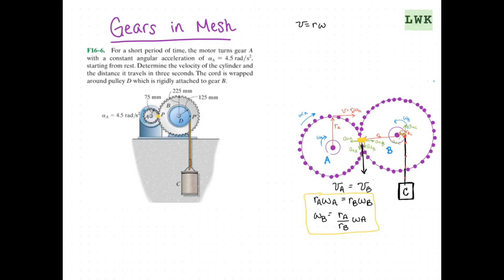Very similarly for our tangential acceleration — shown in green on the right — the tangential acceleration of A equals the tangential acceleration of B. Since tangential acceleration equals R times alpha, we can write radius of A times angular acceleration of A equals radius of B times angular acceleration of B. So the angular acceleration of B equals radius of A over radius of B times angular acceleration of A.